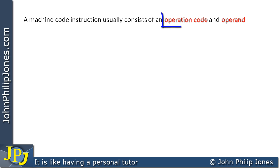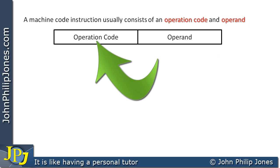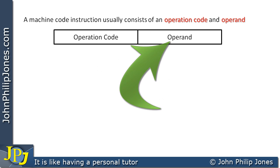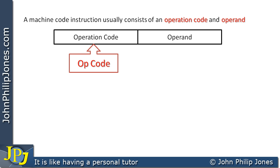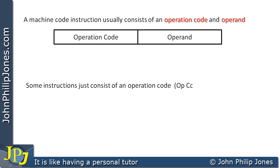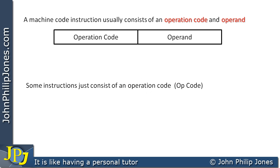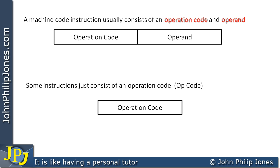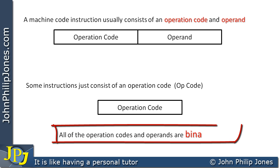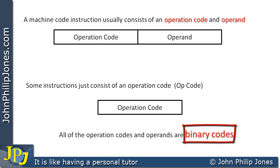All machine code instructions usually consist of an operation code and an operand, and they have two distinct parts. The operation code is often referred to as simply the opcode. Some instructions just consist of an operation code with no operand part. All of the operation codes and operands are binary codes — everything about a machine code instruction is binary, and it's the binary that controls the computer hardware.